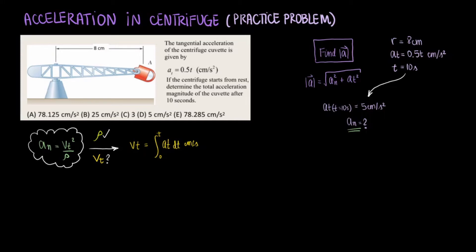We integrate AT from t equals 0 to t equals t. We know AT is 0.5 times t, so we can substitute that in. The integration gives us 0.25 times t squared centimeters per second. Now we can plug that back into the equation for the normal acceleration component.